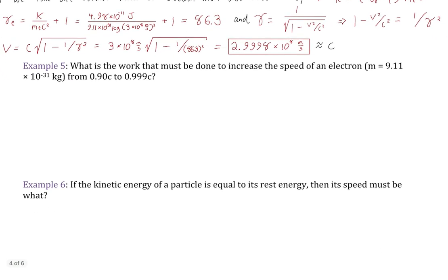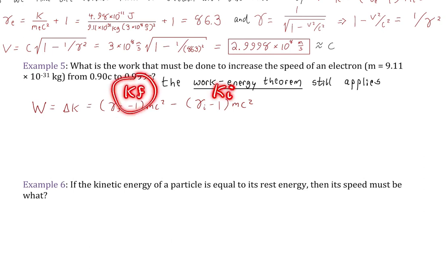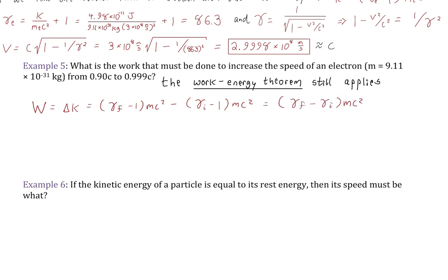Example 5: What is the work that must be done to increase the speed of an electron from 0.9C to 0.999C? The work-energy theorem still applies — work equals the change in kinetic energy, even relativistic kinetic energy. So we have a final kinetic energy minus an initial kinetic energy. Using the relativistic expression, it simplifies because the ones cancel, leaving just the difference in Lorentz factors times mc squared. We write the Lorentz factor as 1 minus V squared over C squared to the negative one-half power and calculate each.